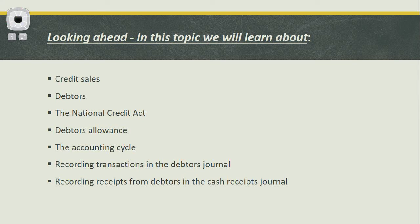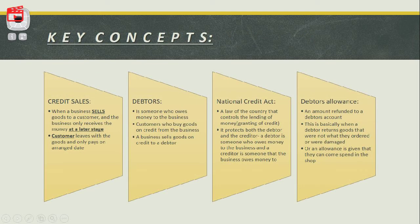Just some key concepts to look at — starting with credit sales. What does the term credit sales mean? In accounting, Grade 9s, you have to remember to always look at transactions from the business's point of view. If the business does a credit sale, that means the business sold trading stock to a customer, but the business is only going to receive the money for those goods at a later stage. The customer leaves with the goods and only pays on an arranged date with the business.